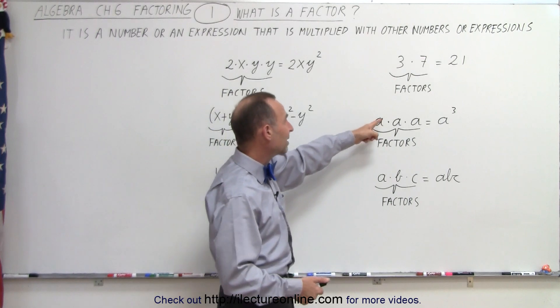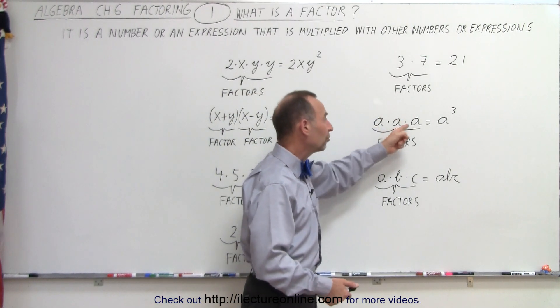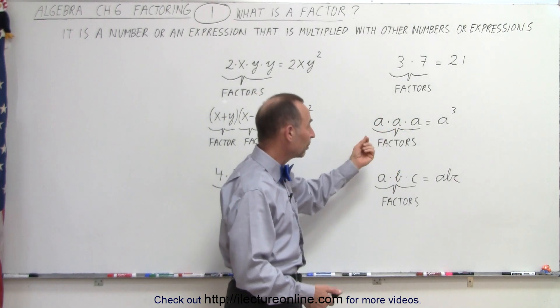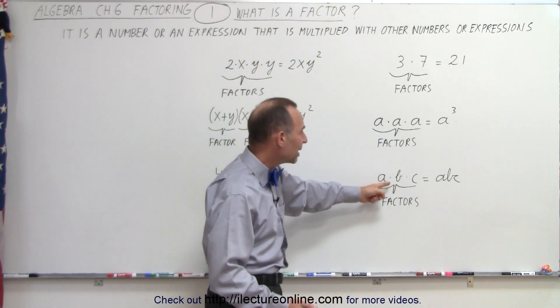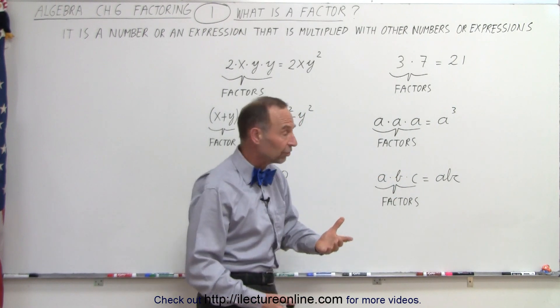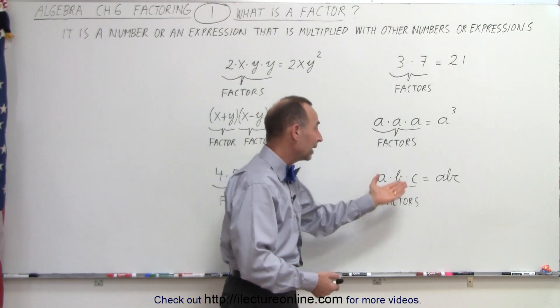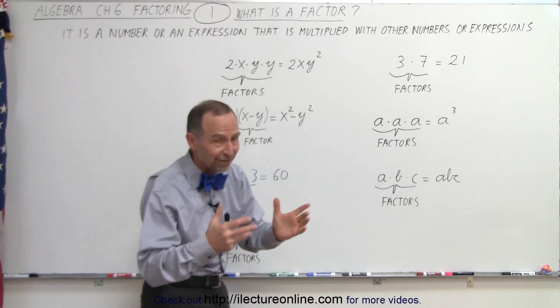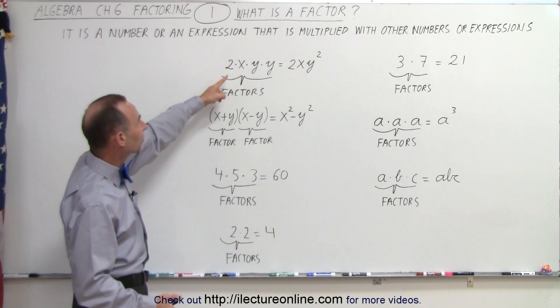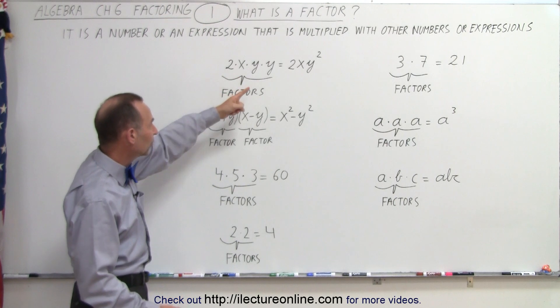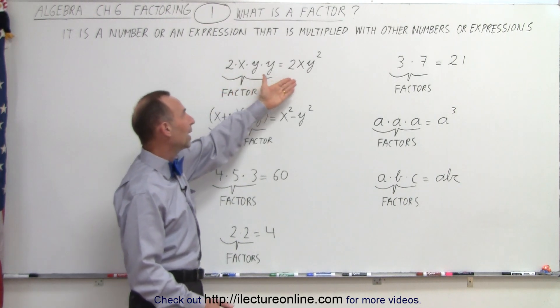Here we see that we have A times A times A. So these are what we call factors. We multiply them together, we get A cubed. Here we have A times B times C. Again, A, B, and C are factors. When we multiply them together, we get ABC. Or we can write 2 times X times Y times Y. These are factors. When we multiply them together, we get 2XY squared.